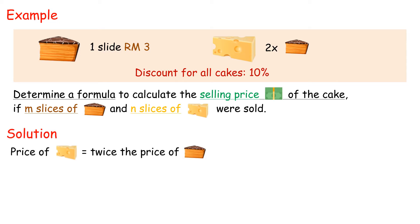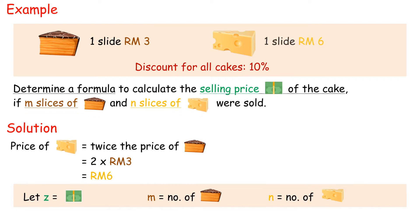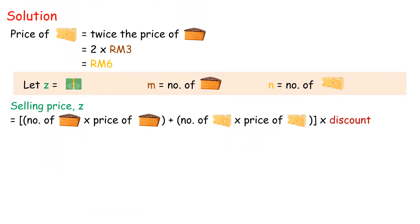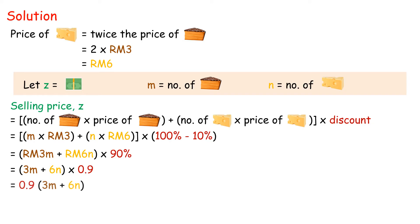Solution. Price of cheesecake equals twice the price of the chocolate cake, equals 2 times RM3 equals RM6. Let z equals selling price, m equals number of chocolate cakes, n equals number of cheesecakes. Selling price z equals number of chocolate cakes times price plus number of cheesecakes times price times discount. Equals m times RM3 plus n times RM6 times 100% minus 10%, equals RM3m plus RM6n times 90%, equals 3m plus 6n times 0.9 equals 0.9 times 3m plus 6n. Hence, the algebraic formula is z equals 2.7m plus 5.4n.